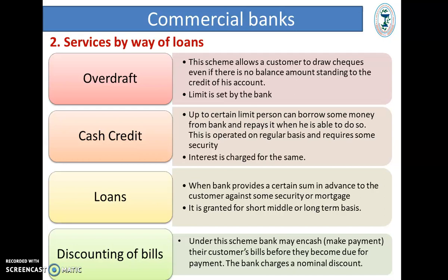However, a bank fixes a limit for a customer beyond which there can be no further overdrawing. For example, if the customer has 20,000 rupees standing to his credit and issues a check of 50,000 rupees, the person has overdrawn 30,000 rupees and must pay interest at a specific rate on that amount on a daily basis. Security is required for overdraft facility, but in many cases personal security of the customer may be adequate.